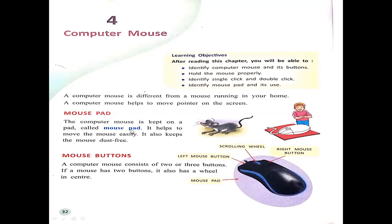The computer mouse is kept on a pad called a mouse pad. It helps to move the mouse easily and also keeps the mouse dust free. In this picture you can see the mouse and the mouse pad underneath it.